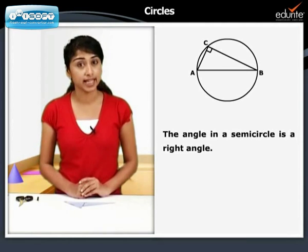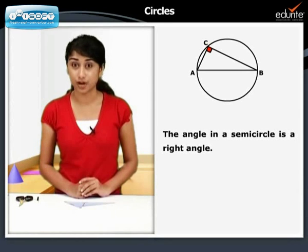We have verified that the angle in a semicircle is a right angle. Next, let us explore the angle at the circumference made in a major segment of a circle.